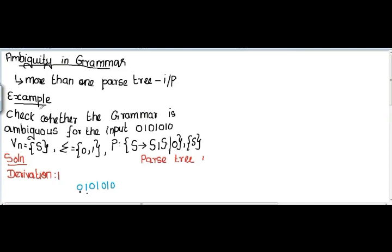I am going to explain this with an example. The question is: check whether the grammar is ambiguous for the input string 0 1 0 1 0 1 0. The non-terminal symbol used is S, the input symbols are 0 and 1, and there are two productions: S → S1S and S → 0, with start symbol S.